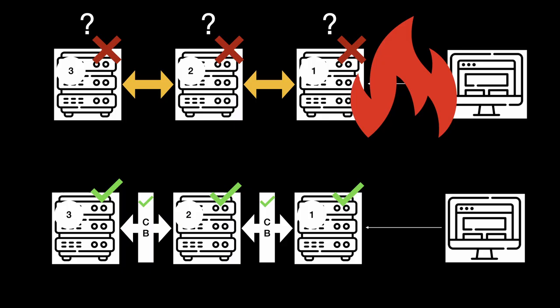Circuit breakers aim to fix that problem by stopping the cascading effect. If there was a circuit breaker between service two and service three, the circuit breaker would detect that service three was having service problems and it would immediately respond to service two with an error. An error is not a perfect solution because a customer would still experience an error, but it wouldn't cause a downtime event to cascade throughout your entire system and potentially bring everything down.